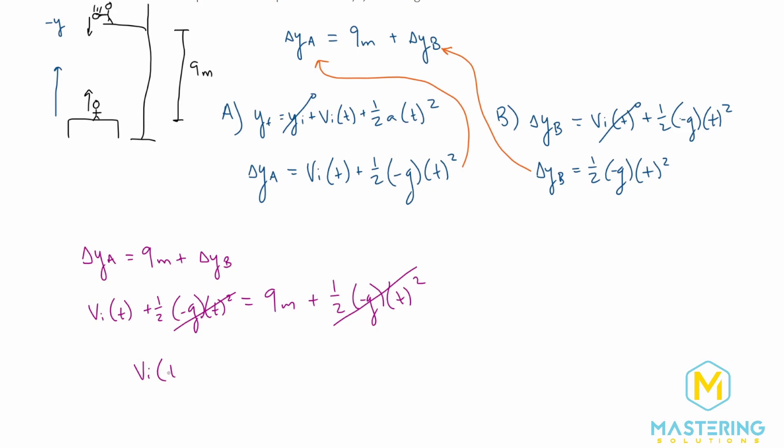v_i times time equals nine meters. Now we want to solve for whatever t is, so let's isolate t by dividing over v_initial. So time will be equal to nine meters divided by the initial velocity.